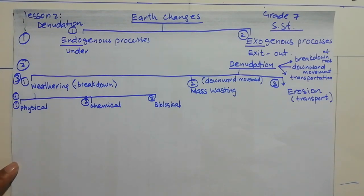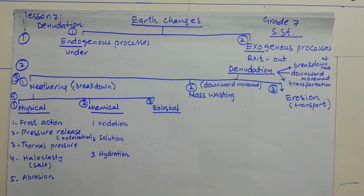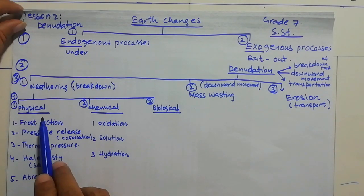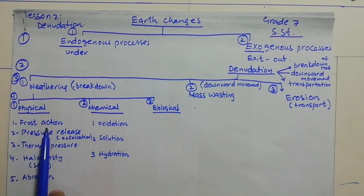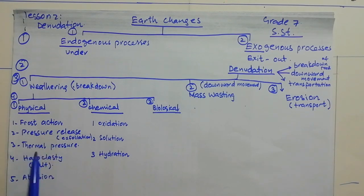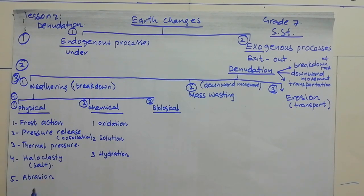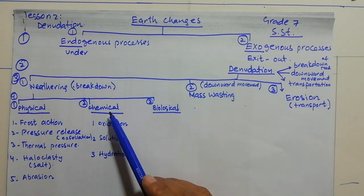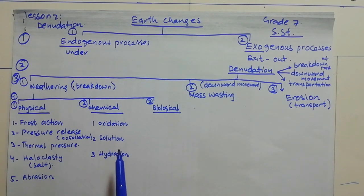For saving time I've already written here the factors involved in physical weathering. First one is frost action — frost is ice. Second one is pressure release — exfoliation is a keyword here. Third one is thermopressure — meaning something related to heat. Fourth one is haloclastic — salt is a keyword for the haloclastic term. Fifth one is abrasion — it's a difficult term but its explanation is very easy.